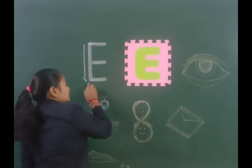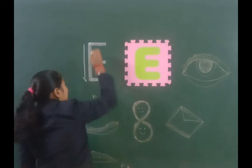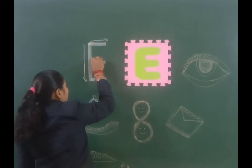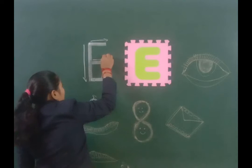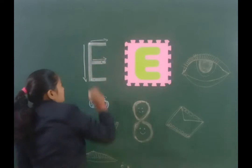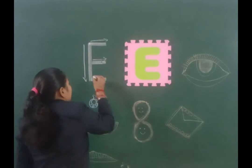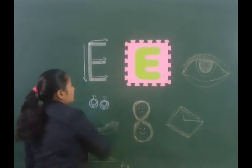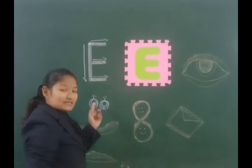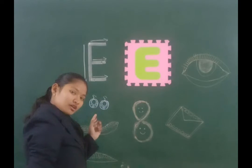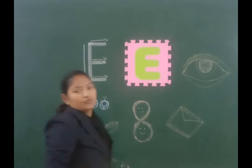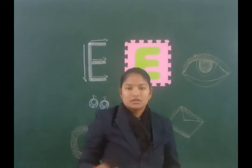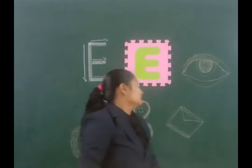Top to bottom, standing line. Then one slipping line. Again, one slipping line. And one more slipping line. It's letter E. Now we will learn vocabulary of letter E.